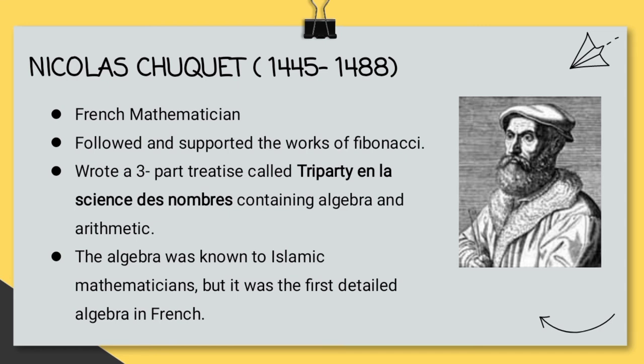Looking at specific mathematicians in France, we have Nicolas Chouquet. He was a French mathematician who supported the works of Fibonacci and was a follower of him. He is most famous through writing a three-part treatise called Tripartite in a science des nombres, containing algebra and arithmetic problems. In three parts, hence the word tripartite, which tripartite is not a French or Italian word, but it comes from parte, which is Italian, and then tri, which is three. It's like three parts, but it's more commonly known as just Tripartite.